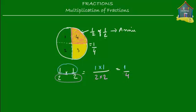So half times half is nothing but one fourth or one quarter — which is exactly the same as what we saw from the pizza. Half of half, which equals half times half, is the numerators multiplied by each other upon the denominators multiplied by each other, giving you one fourth — the same as one out of the four slices of the pizza.